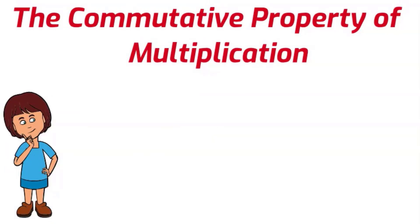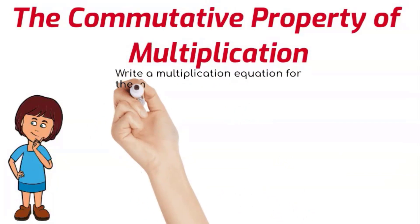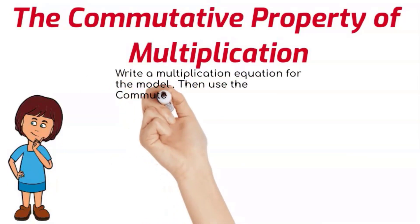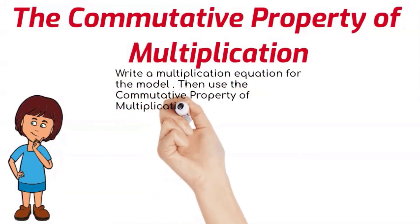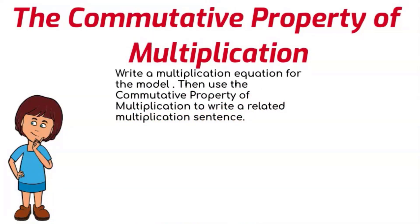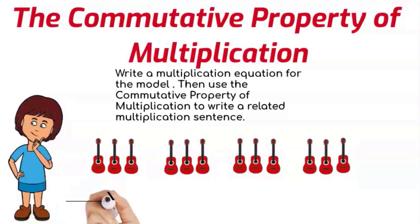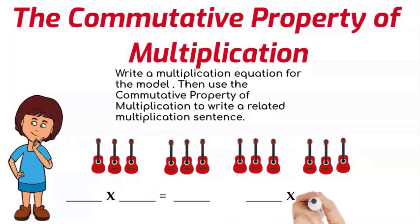Now let's prove that you know it. We're going to write a multiplication equation for the model, then use the commutative property of multiplication to write a related multiplication sentence. Here we have some guitars placed in groups. I want you to notice how many are in each group and how many groups there are. How many groups are there?